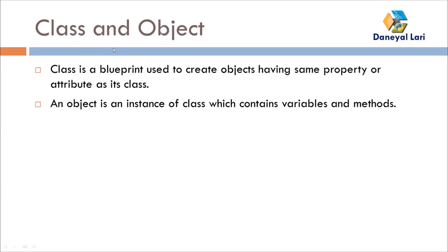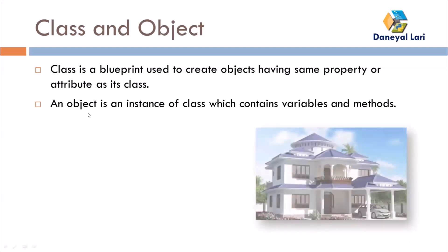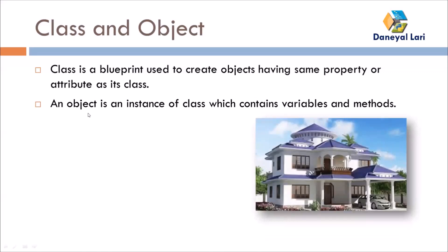Now let's talk about class and object. A class is a blueprint used to create objects having the same properties or attributes as its class. The existence will be of the object, not of the class. Suppose you want to build a building.